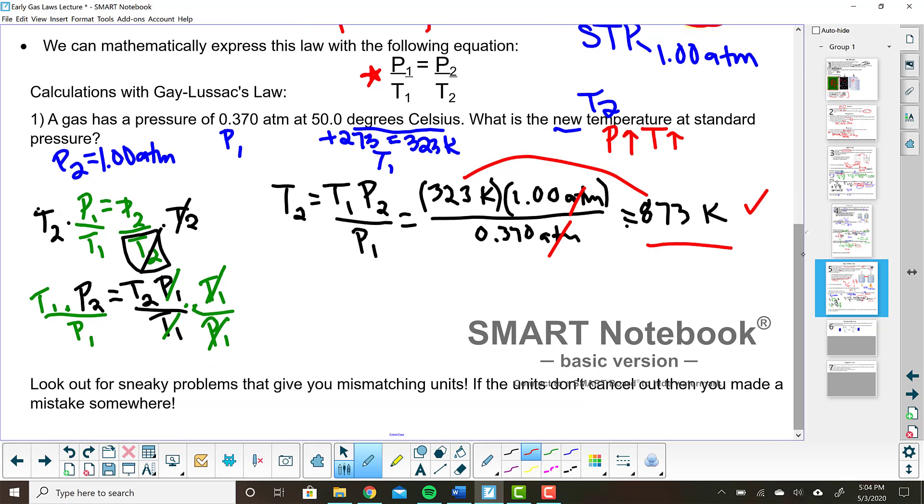I'm just going to do the one example since we did many similar problems on the worksheet with Charles Law and Boyle's Law. If you need more help with this, again, I encourage you to get on the Zoom and ask your questions or email me. Again, I do want to draw your attention to this last line here. Please look out for sneaky problems that give you mismatching units. You may or may not have seen that on the Charles and Boyle's Law worksheet. You will continue to see that. Make sure you are looking out for those mismatching units. If the units don't cancel, then there is a mistake somewhere.